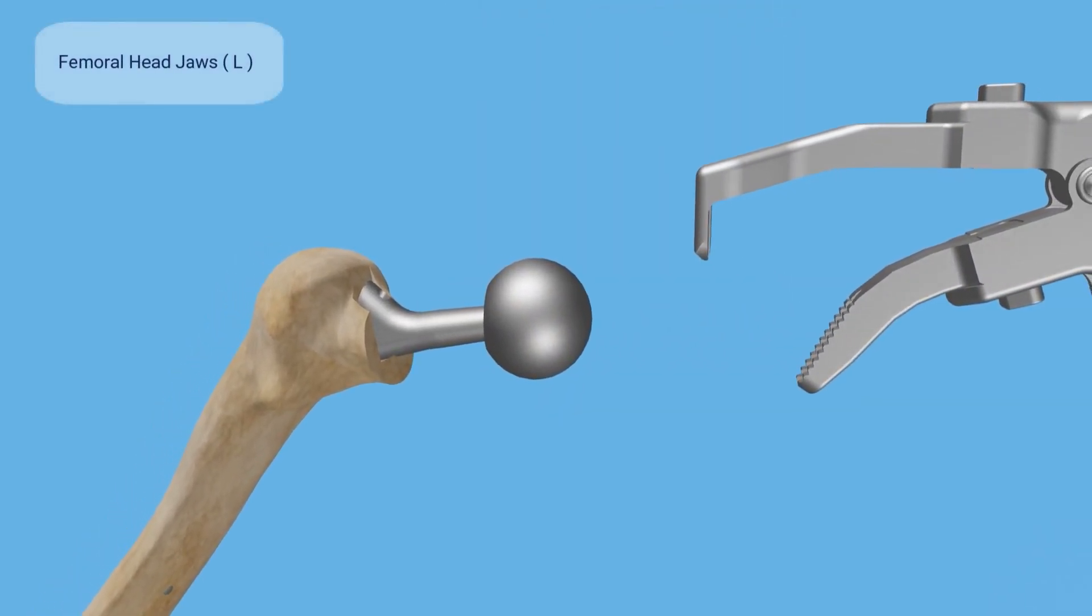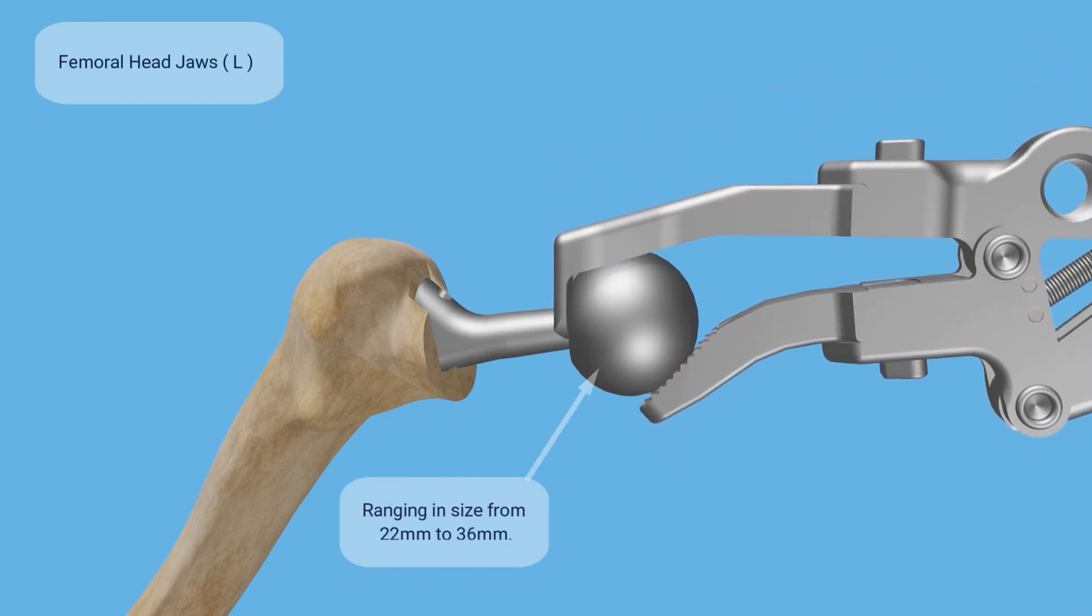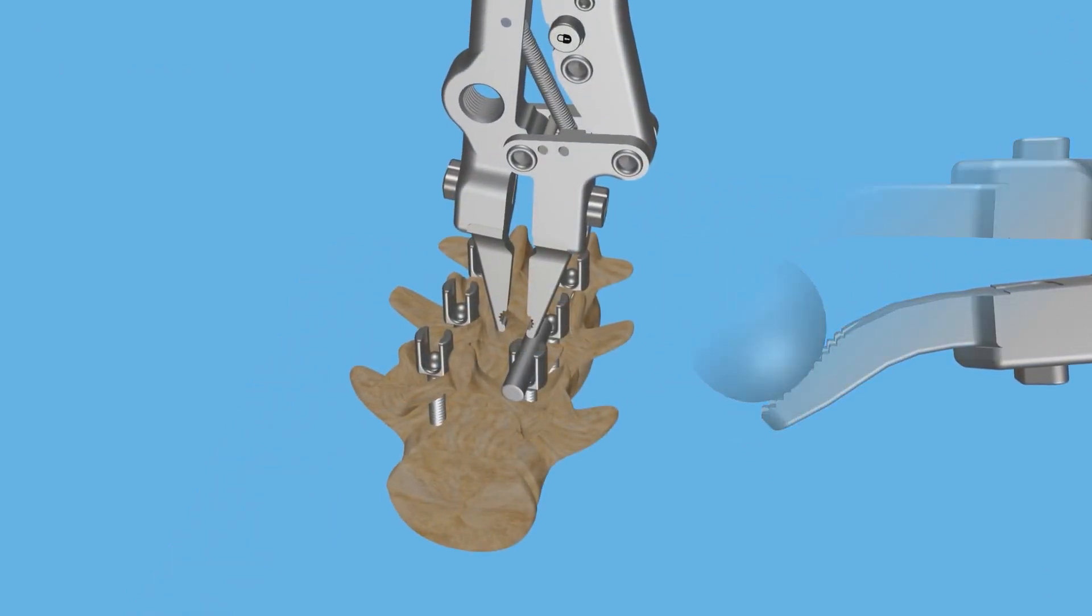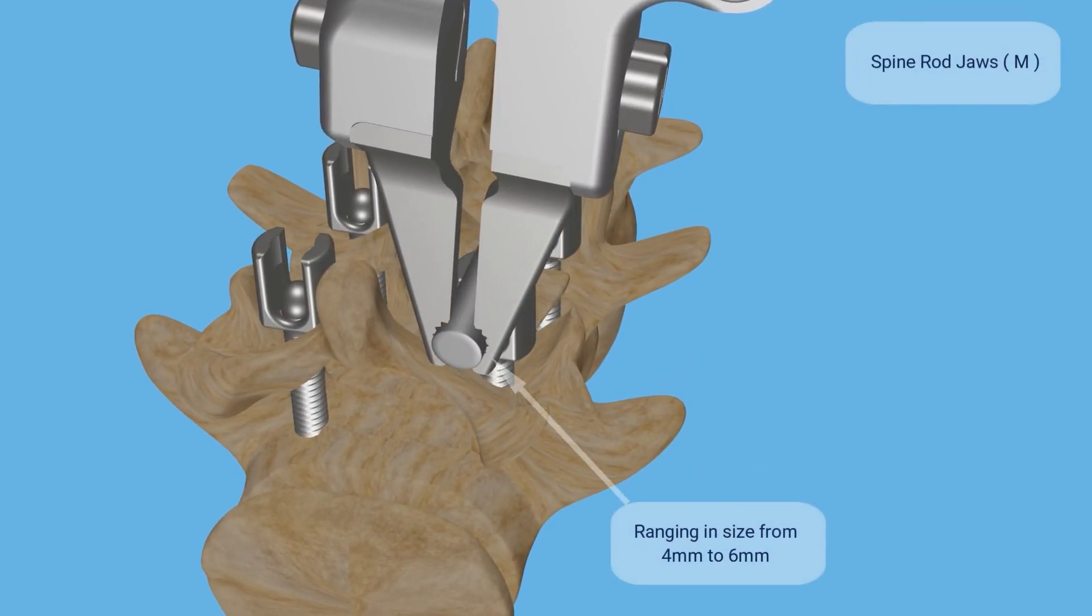The femoral head jaws are used to remove femoral heads ranging from 22 mm to 36 mm. The spine rod jaws remove spine rods ranging from 4 mm to 6 mm in diameter.